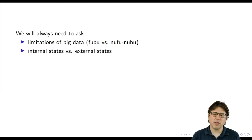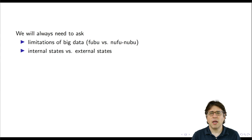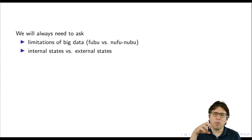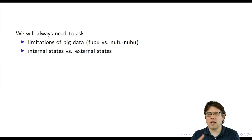Another important reason why we'll always need to ask people is the difference between internal states and external states. External states are things you do — your behavior, like how many times you went to the doctor last month. Internal states are different: things like your knowledge, attitudes, and expectations for the future. It's often very difficult to infer people's internal states from their external states, and social scientists often care about internal states — either as things we try to understand or as predictors of external states. So we'll continue to need to ask people to learn about internal states.